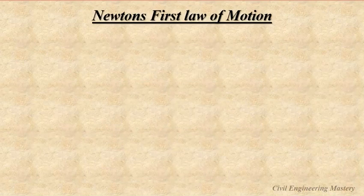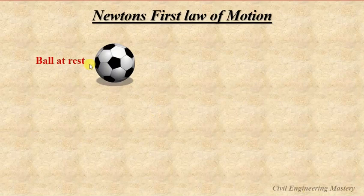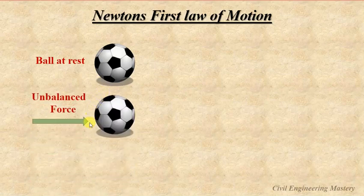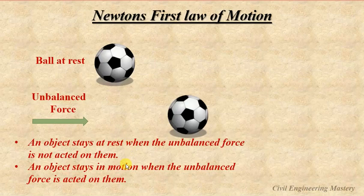Moving on to equations of equilibrium, it is useful to recall our basic physics — Newton's first law of motion. Consider a ball at rest: this ball will remain at rest until a force acts on it. When an unbalanced force acts on the ball, it will start to move. An object stays at rest when no unbalanced force acts on it, and stays in motion when an unbalanced force acts on it.